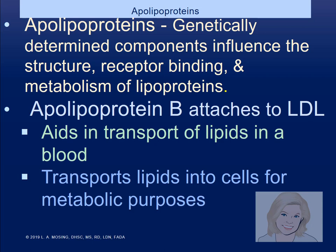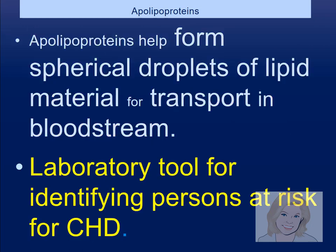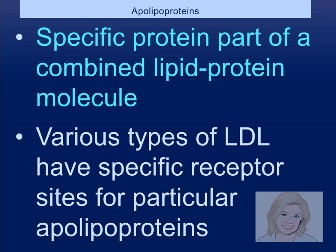Apolipoproteins are genetically determined components that influence structural receptor binding and metabolism. For instance, apolipoprotein B attaches to LDL, transports lipids in the blood and into cells for metabolic uses. Apolipoprotein B-100 provides the recognition site for LDL receptors, causing LDL to be transported by endocytosis into the cell. Apolipoproteins specifically form spherical droplets of lipid material for transport in the bloodstream.